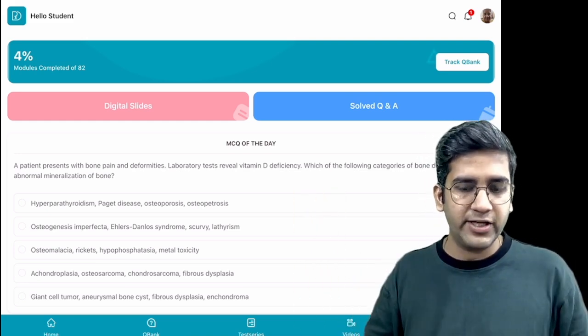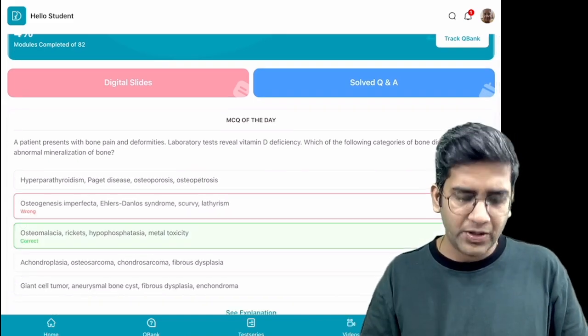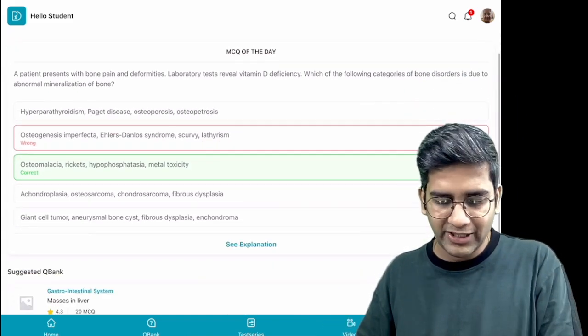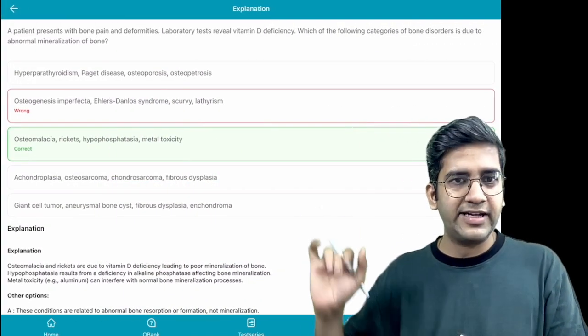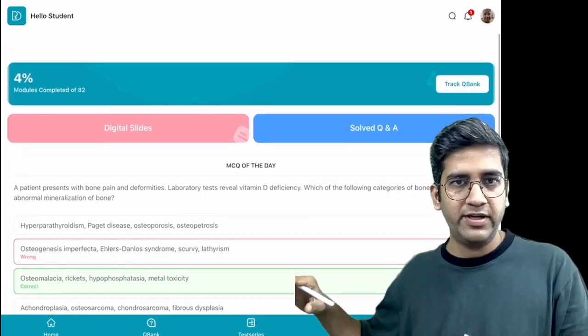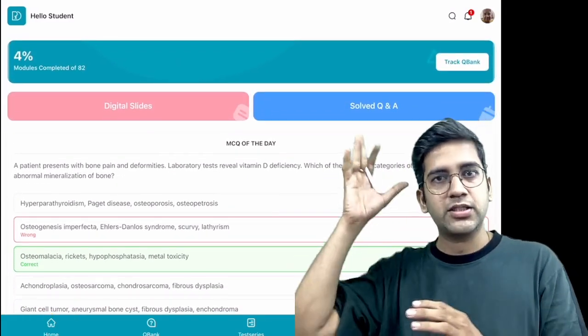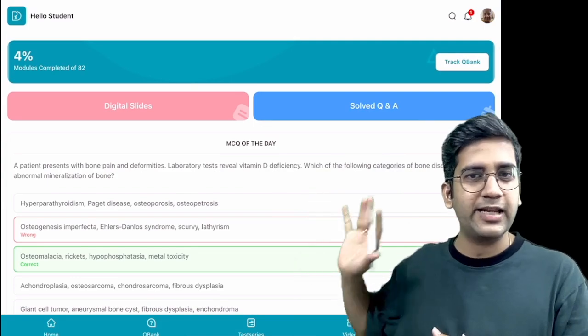Then you have an MCQ of the day. You can click anything in the MCQ of the day. We have few glitches and have definitely taken care of that. Click on the solution, and you can see the explanation. There's a tiny explanation there for you. That's about the home page: you have Digital Slides, Question and Answer, the completion tracker, and MCQ of the day.